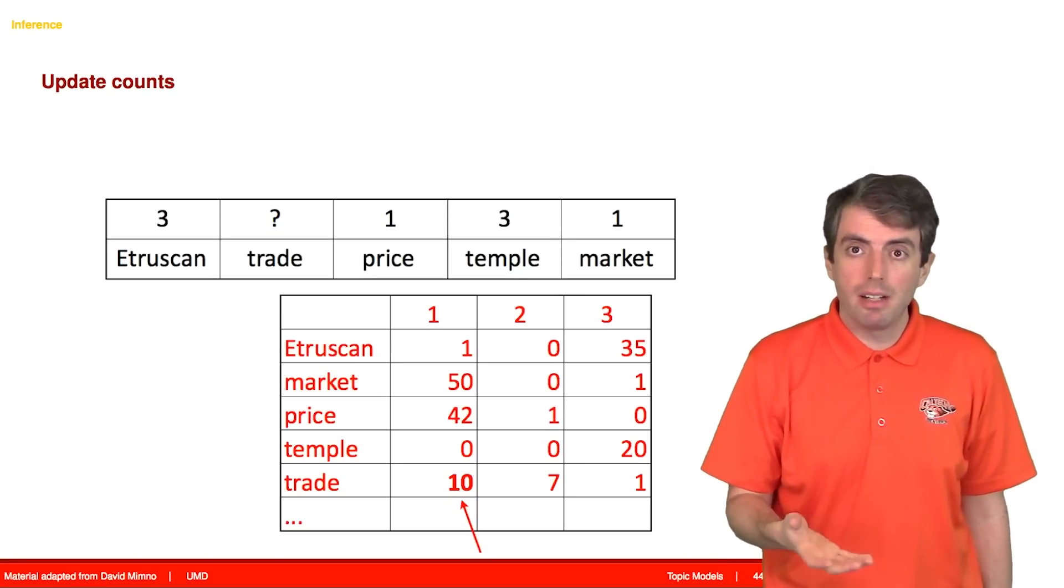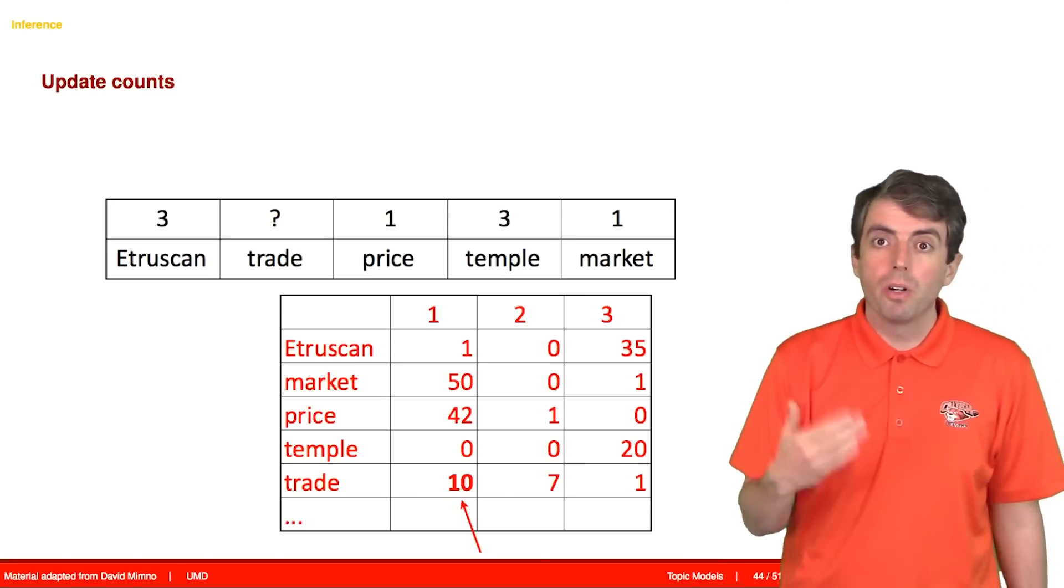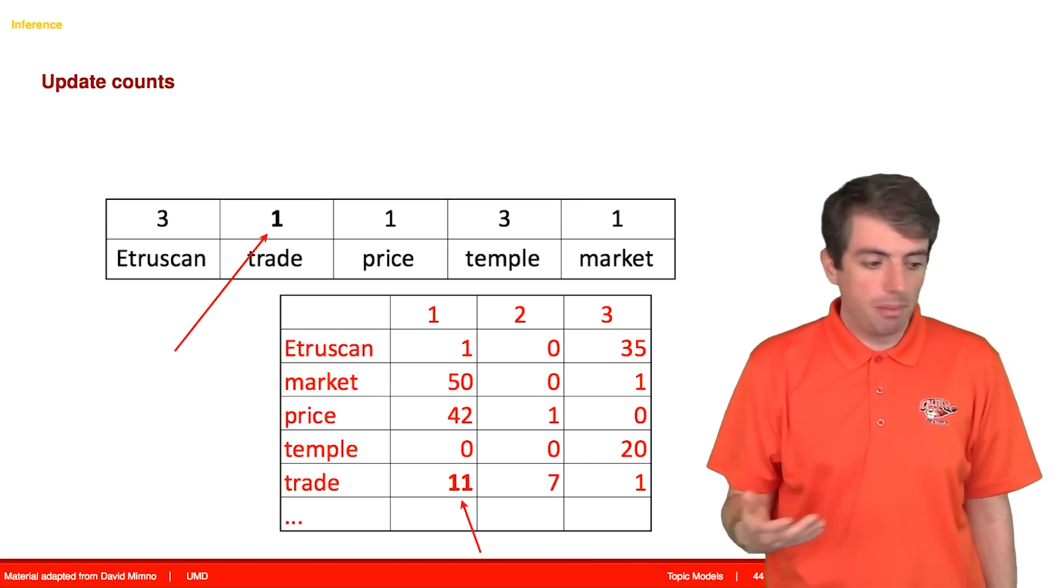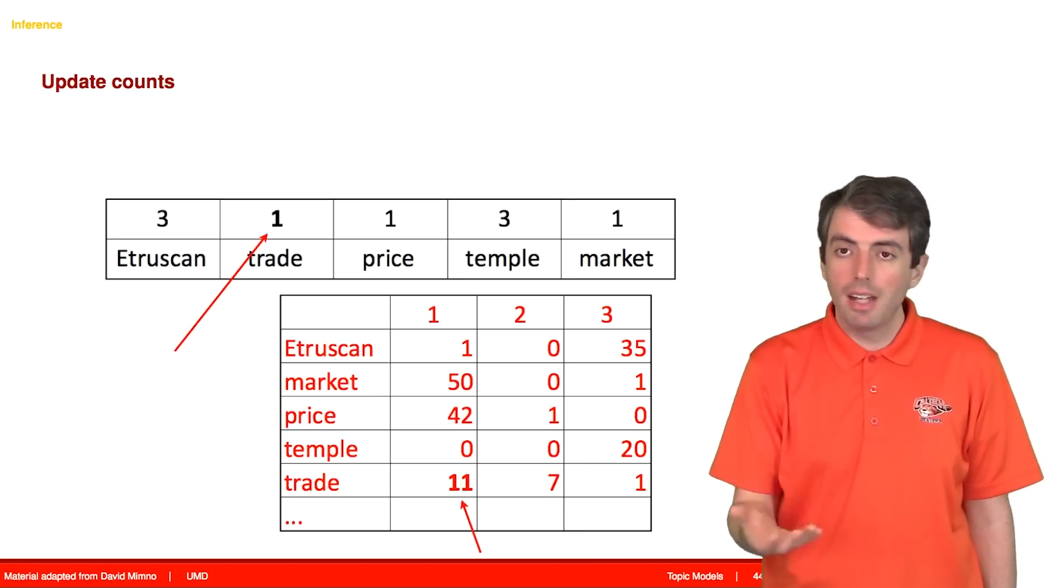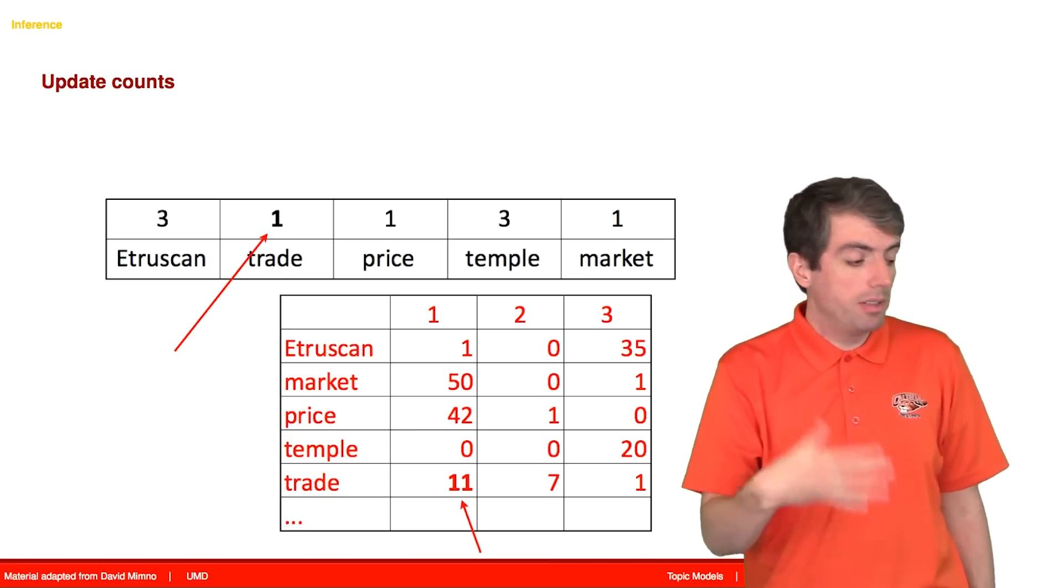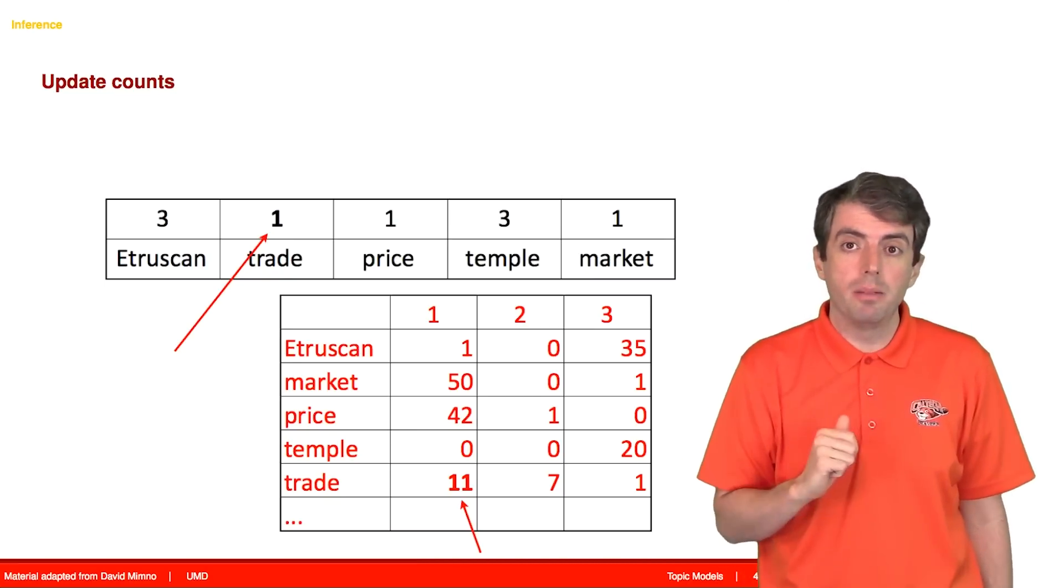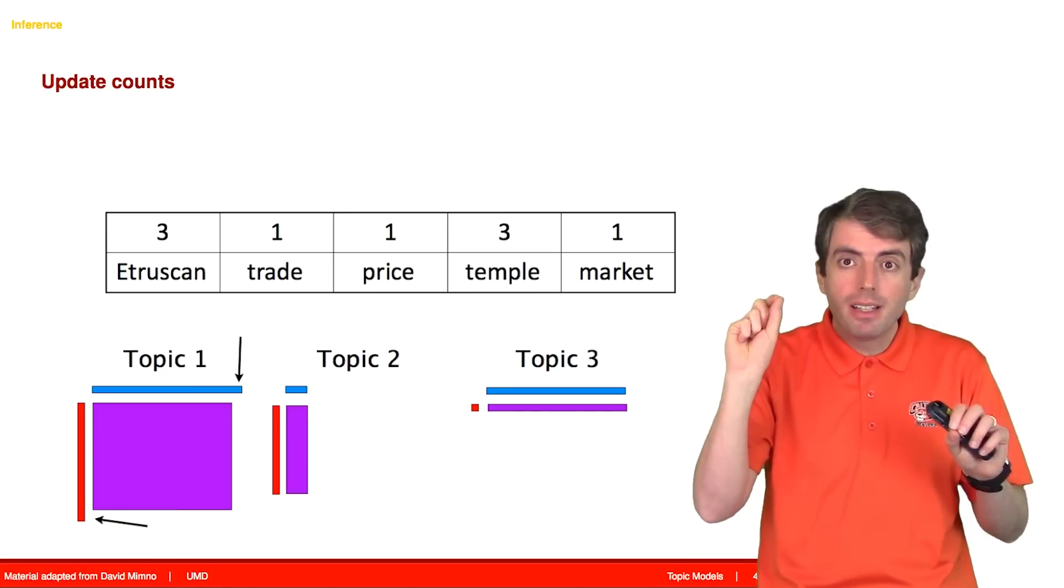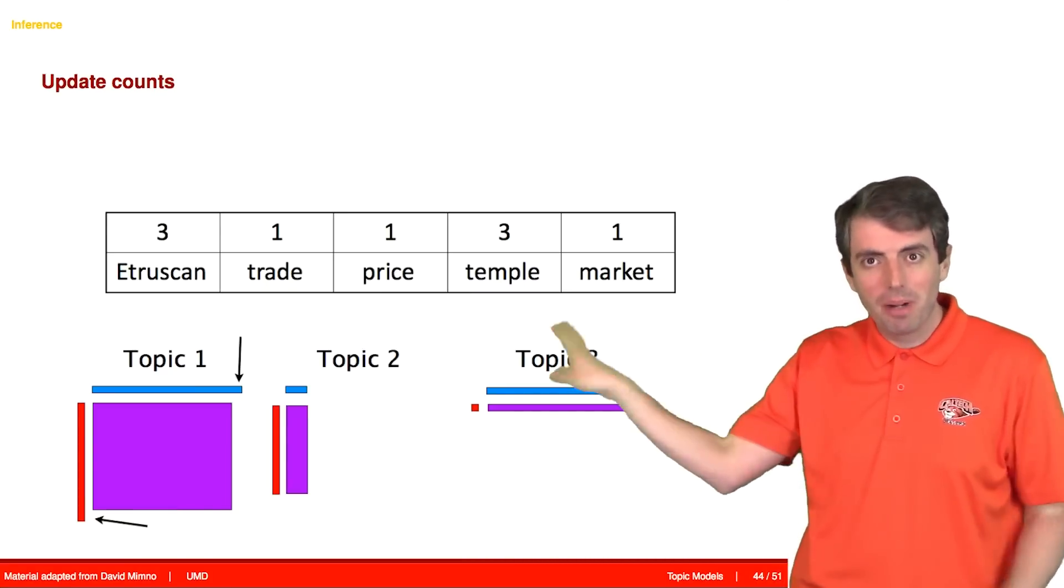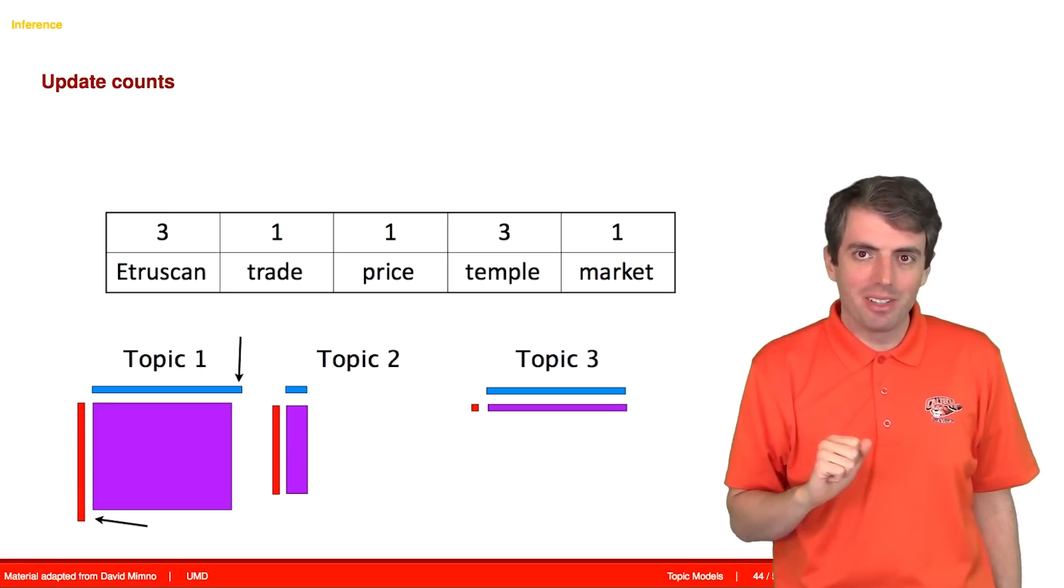And we update our counts accordingly. So before, the word trade was used 10 times in topic 1. That count now goes up to 11, and trade takes on topic 1. And now this document likes using topic 1 a lot more than it did before. And both the horizontal and the vertical components of the probability that we computed before get a little bit larger.